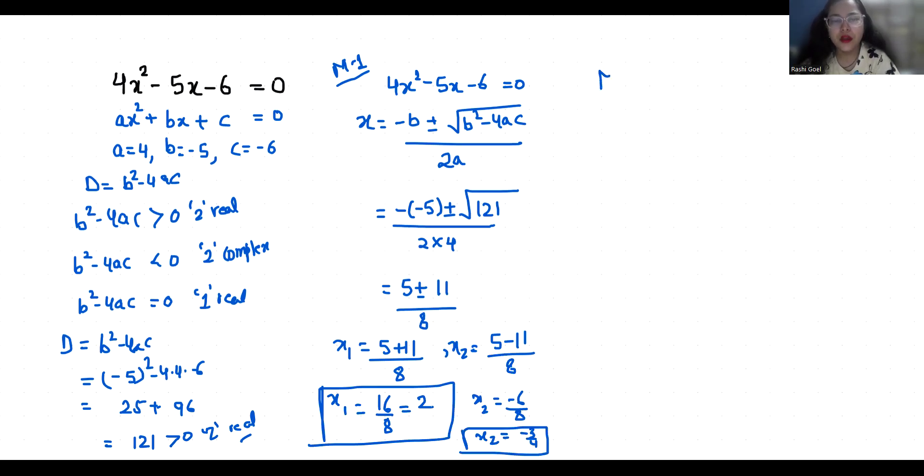Now, Method 2: 4x² - 5x - 6 = 0. I am going to solve with the middle term split method. I can write this -5x as -8x + 3x, -6 = 0.